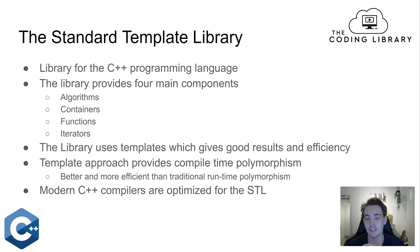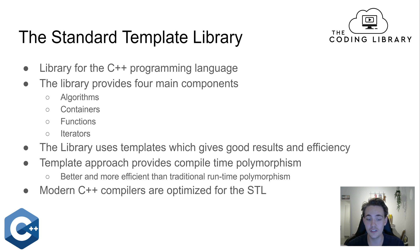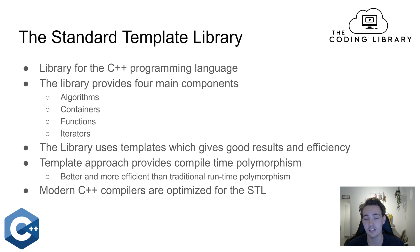The library uses templates which gives good results and is very efficient. The template approach provides compile-time polymorphism, which we talked about when discussing object-oriented programming in a previous video. This is better and more efficient than traditional runtime polymorphism because it happens at compile time instead of run time, so our programs will be better and more efficient.